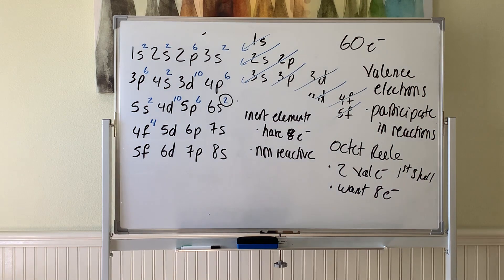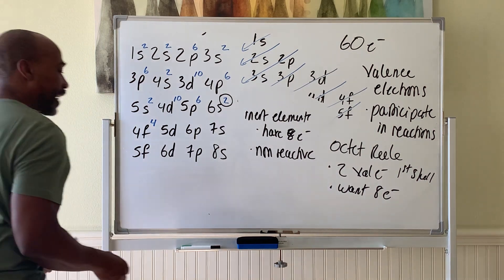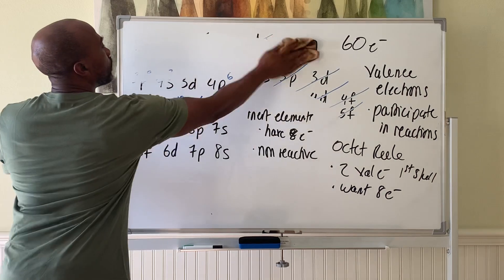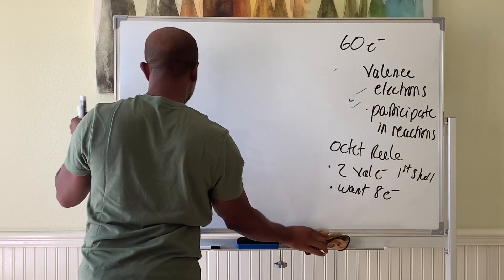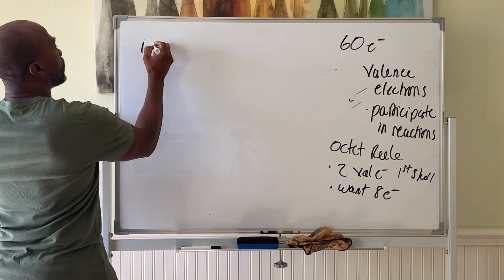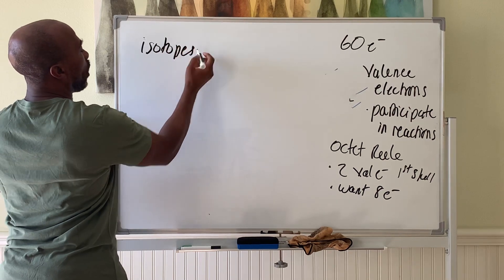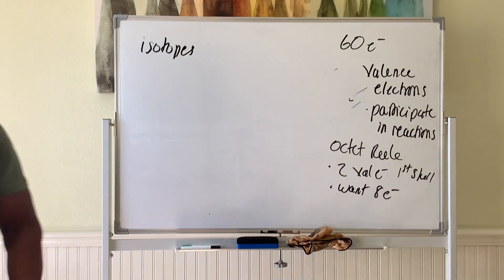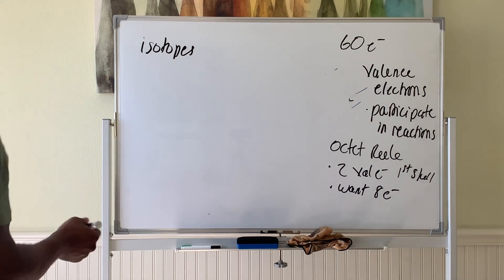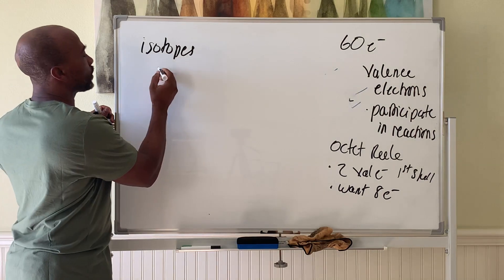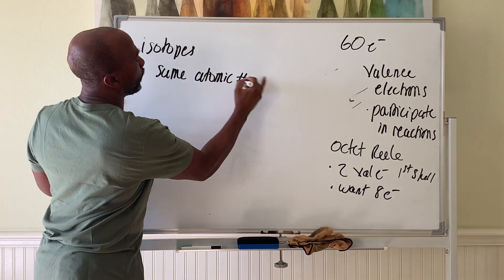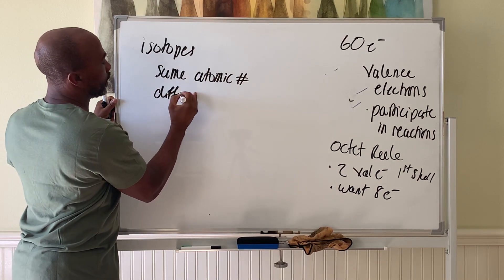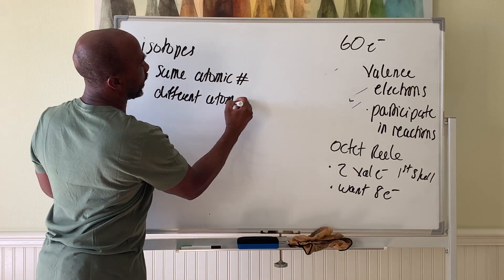Now let's keep going since we got interrupted there. We'll next look at the idea of isotopes. Isotopes are elements with the same number of protons but different number of electrons. So isotopes have the same atomic number but different atomic mass.